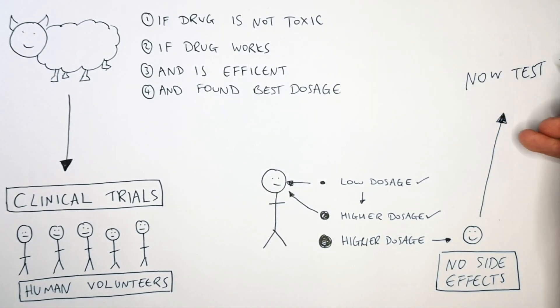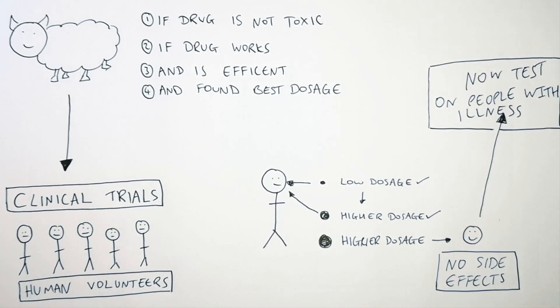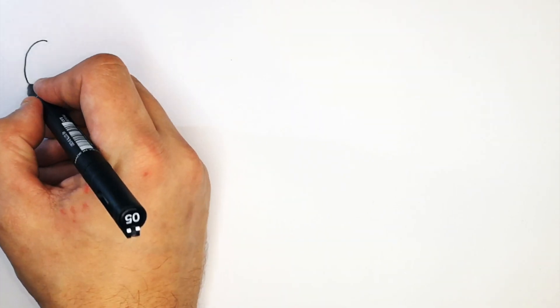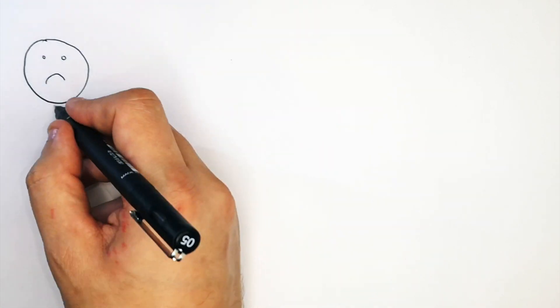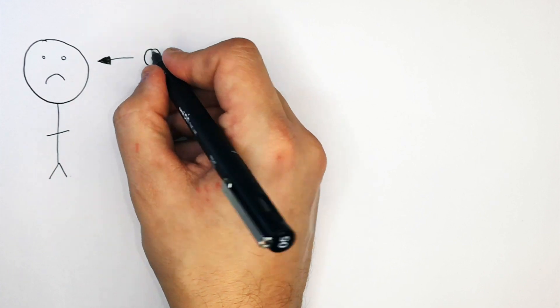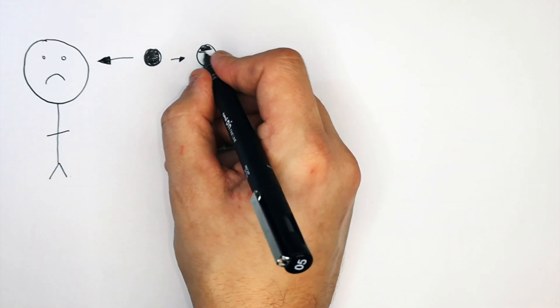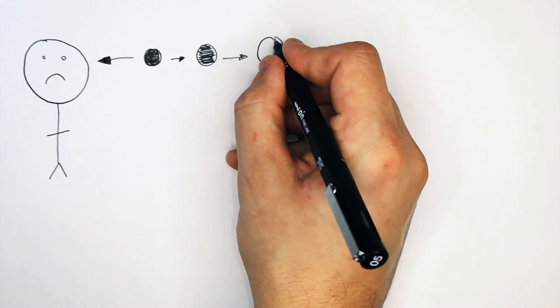And if there are no side effects you will then use the drug on people that have the illness that the drug is designed for. So now you must give the drug to someone who has the illness to see whether or not it is effective against treating the illness in an ill person and you then will increase the dosage of the drug in the sick people.